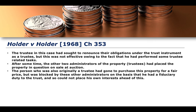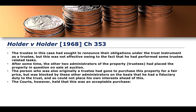The person who was originally a trustee had gone to purchase this property for a fair price, but was blocked by the other administrators on the basis that they were in fact under a fiduciary duty under the trust and so could not place their own interests ahead of that obligation. So seemingly, a trustee had been given obligations under the trust instrument, performed some of them, sought to renounce themselves as trustee, at which point the other administrators sold the property at auction and this original trustee sought to purchase it. The courts, however, held that this was in fact an acceptable purchase.